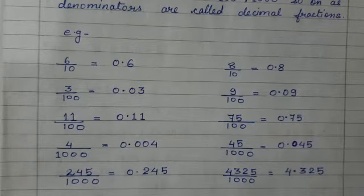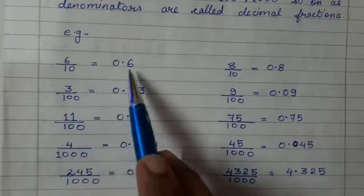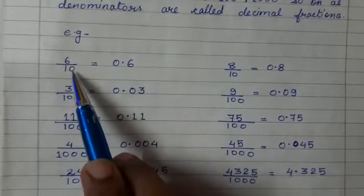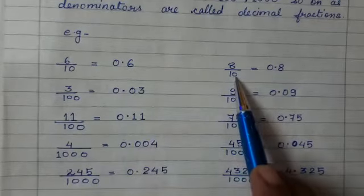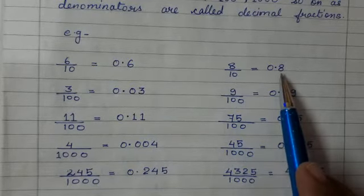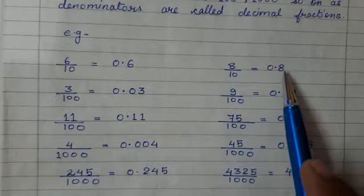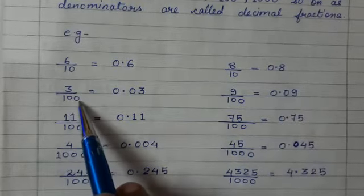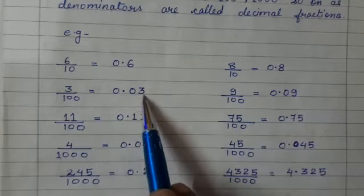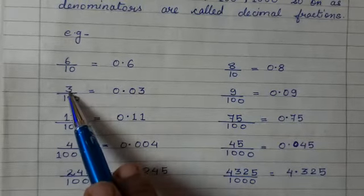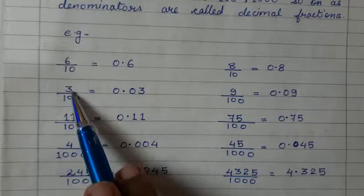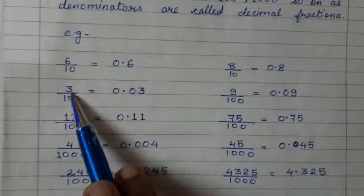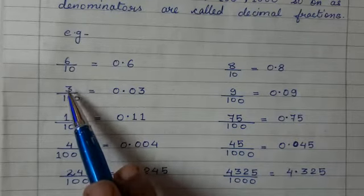If you see all these examples, you can establish a relation between the number of zeros and the decimal place. Here, the denominator has 1 zero, so the decimal place is 1. Similarly, 1 zero in the denominator means decimal place is 1. Decimal place means the digit after the decimal. Here it is 2 zeros, so decimal place is 2. The numerator is only 1 digit, that is 3. Since 100 has 2 zeros, we have to convert it in the form of a 2-digit number. Therefore, it is 0.03.